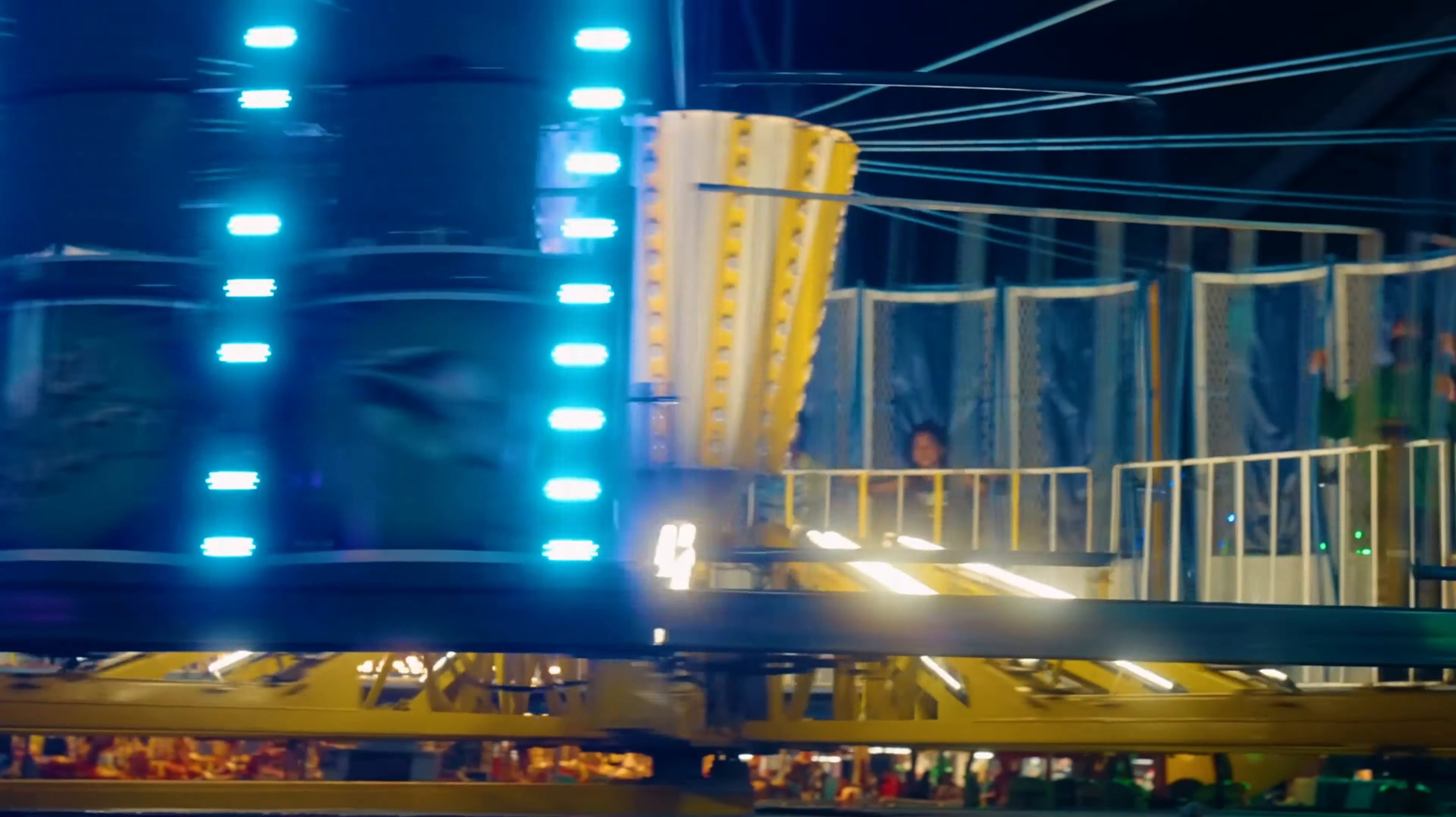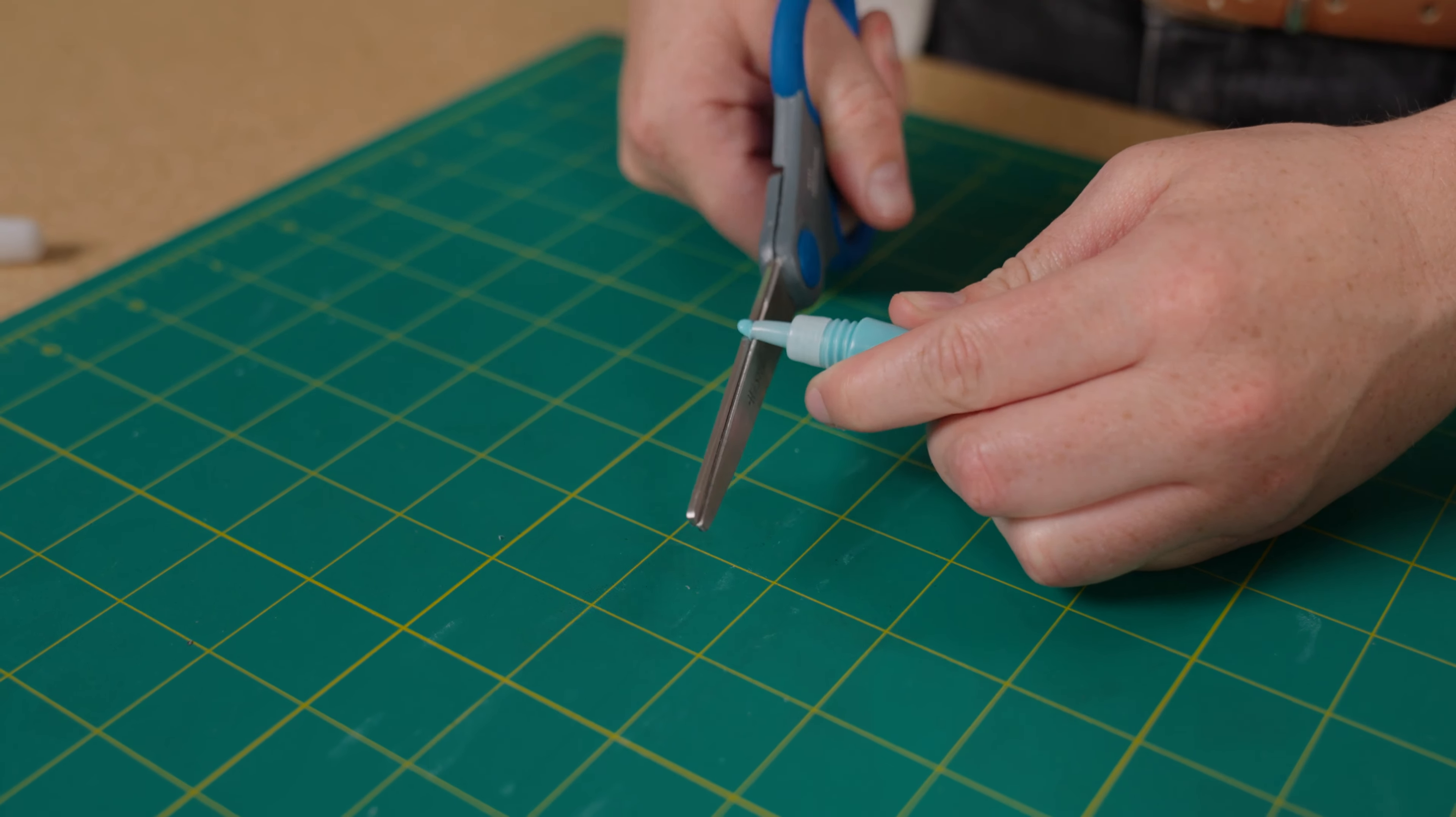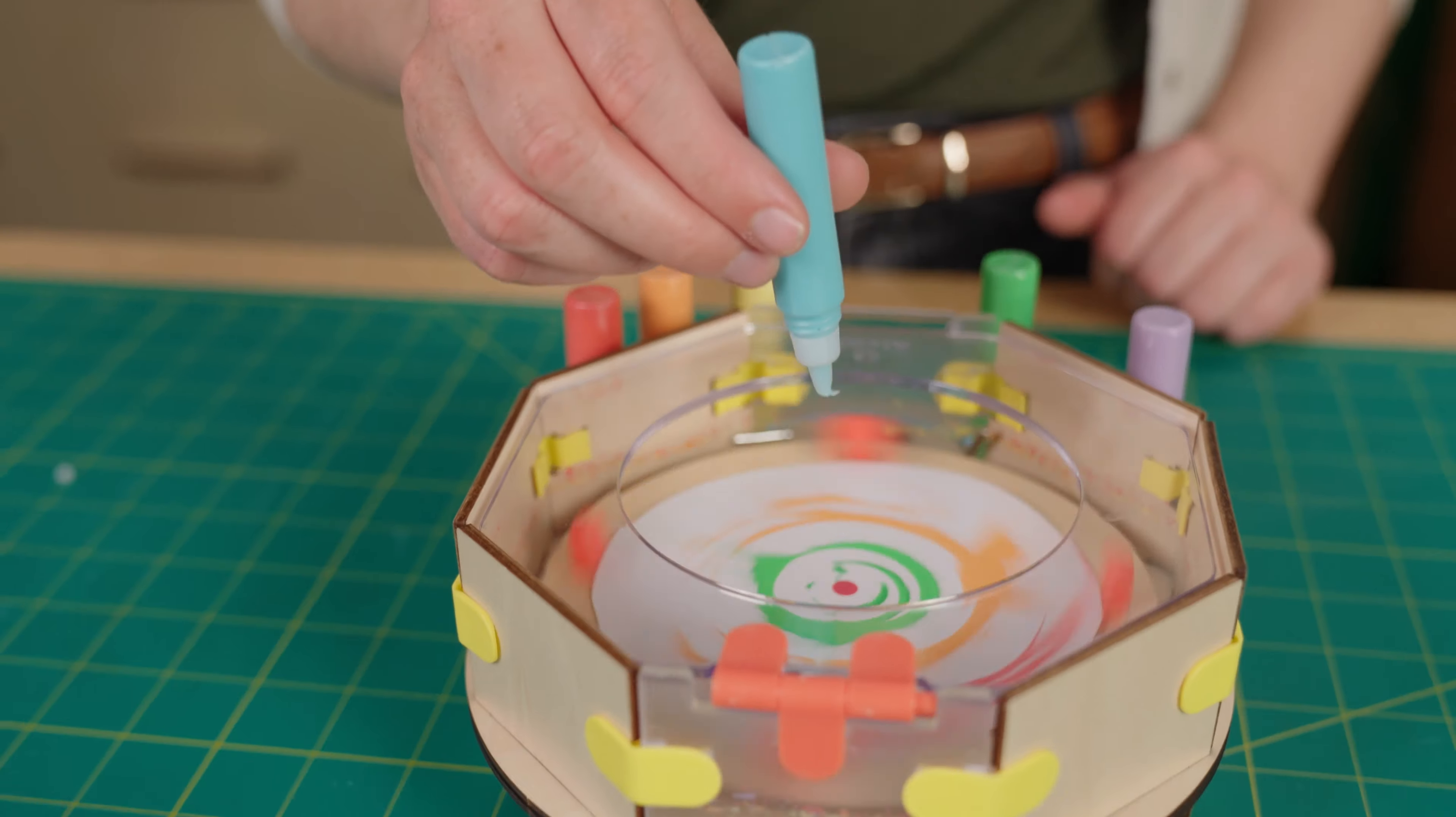It's like those carnival rides. Have you been on those where they spin really fast and you get pressed up against the walls? Ooh. Yeah. That's what the paint's doing. So fun. And one more tip. If the paint gets stuck in the tube, make sure the tip is fully snipped off. And if it's still stuck, give it a little shake.